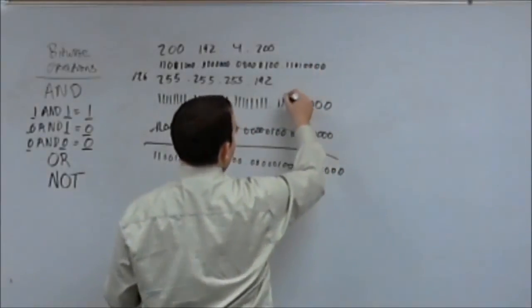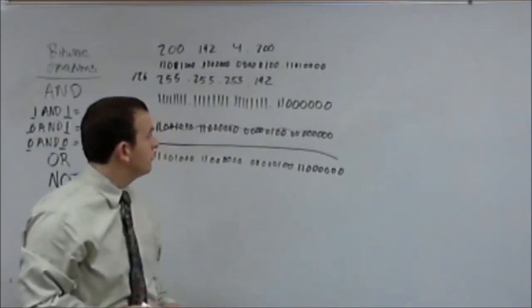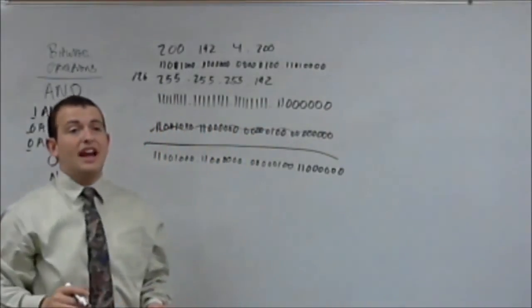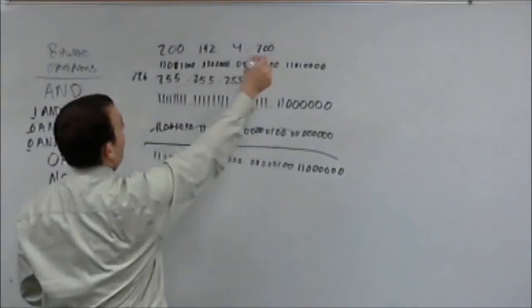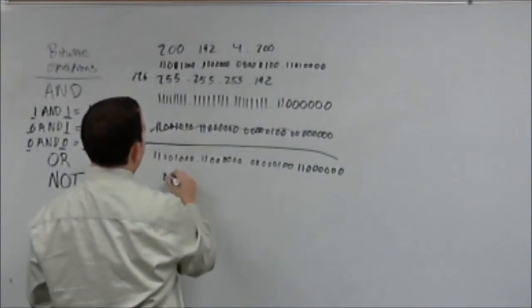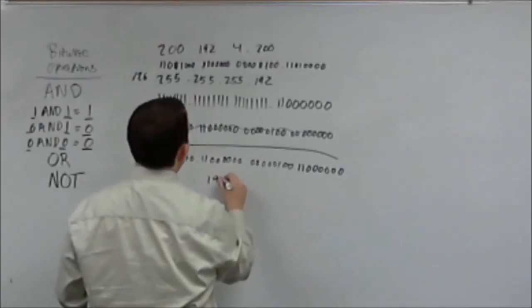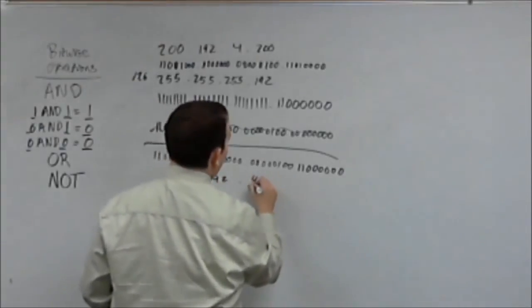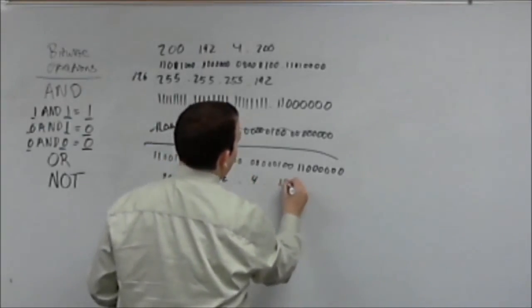See? We've got this one and this one. But after that, everything's going to be zero. So, our network address for this host address is going to be 200.192.4.192. Make sense?